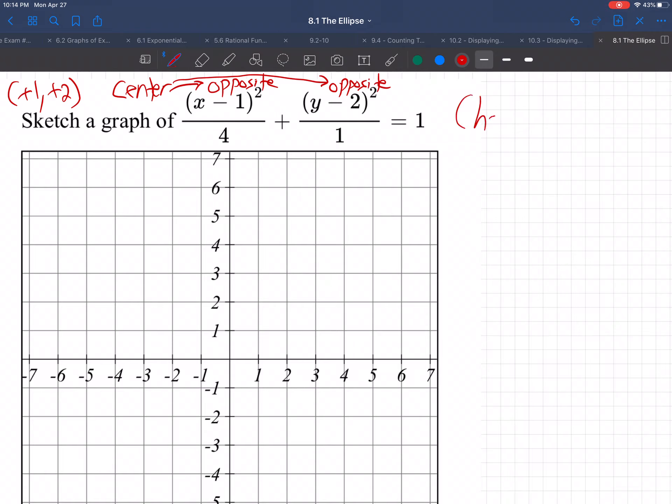So the way we write it, I'll give you the official way we write it, is people write h, not h, they do not write h. They write x minus h squared over a squared plus y minus k squared over b squared equals 1. That's the general form.